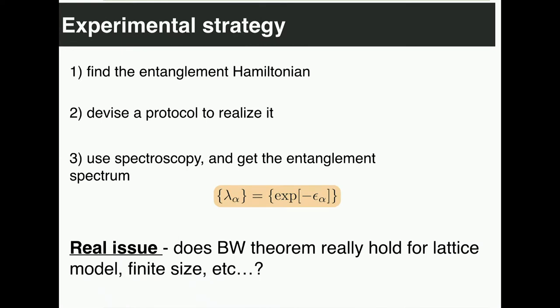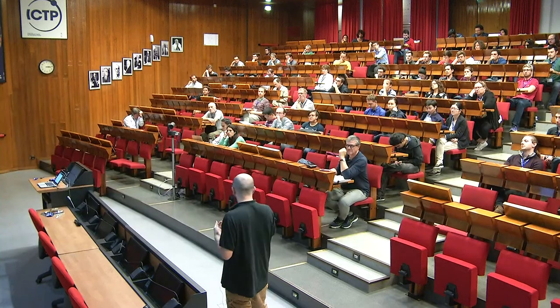So this is the Bisognano-Wichmann result. Now the experimental strategy: the first thing we have to find is the entanglement Hamiltonian — we already have the tool for doing that. The second is to devise a protocol to actually realize it. The third is to do spectroscopy, and if we do spectroscopy we get the epsilon alphas, the eigenvalues of these operators, which are immediately related to lambda alpha. There is a catch, though: these results, since they were derived in field theory, rely on assumptions like Lorentz invariance and an infinite system. The question is — can we relax some of those? And in particular, in terms of cold atoms or trapped-ion systems, can we apply these results to finite lattice systems? Do they hold?